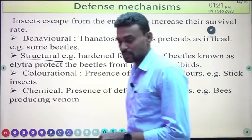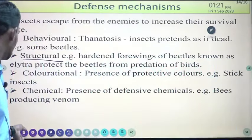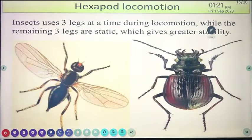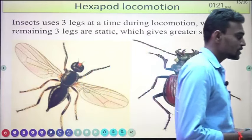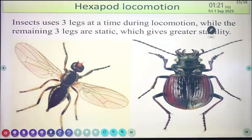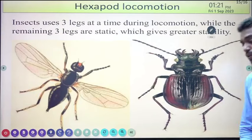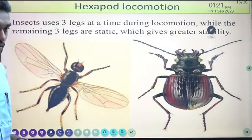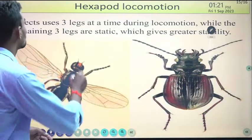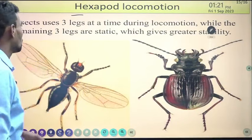Hexapod locomotion is another point: insects use three legs at a time during locomotion while the remaining three legs are static, giving them greater stability on any plant or surface, contributing to their dominance.